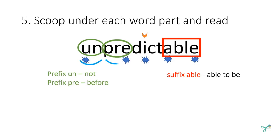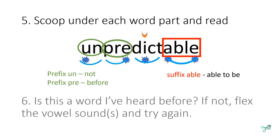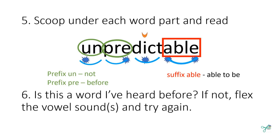Step five is to scoop under each word part and read: un - pre - dict - able. Un-predict-able. Wait, that's not right. Step six would have us flex the vowel sound in the suffix 'able' to 'uh-ble' and blend the word parts again: un-predict-a-ble. That's a word we know!